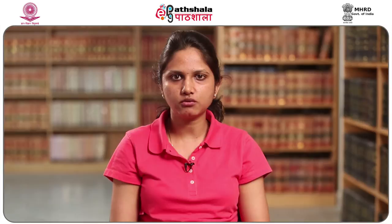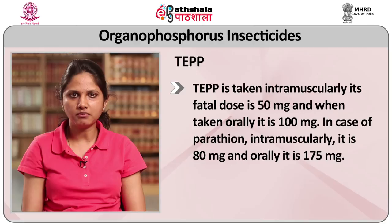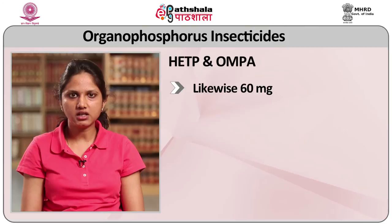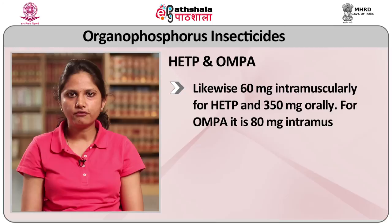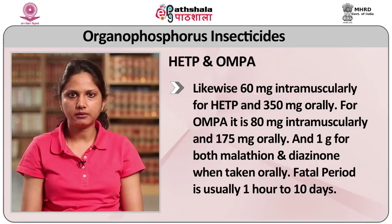Death is generally caused by paralysis or by respiratory failure, circulatory arrest and edema of lungs or brain. Fatal dose varies from compound to compound: for TEPP, the intramuscular fatal dose is 50 mg and oral is 100 mg; for parathion, it is 80 mg intramuscularly and 175 mg orally; for HETP, 60 mg intramuscularly and 350 mg orally; for OMPA, 80 mg intramuscularly and 175 mg orally; and 1 gram for both malathion and diazinon when taken orally. The fatal period is usually 1 hour to 10 days.